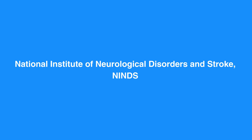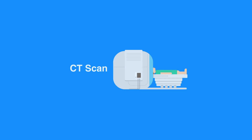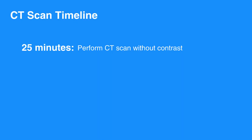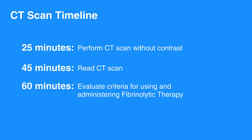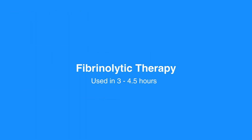The NINDS established time goals advise that the individual have a general assessment by an expert and an urgent CT scan without contrast within 10 minutes of arrival. Within 25 minutes, perform a CT scan without contrast and a neurological assessment, and read the CT scan within 45 minutes. Within 60 minutes, evaluate criteria for using and administering fibrinolytic therapy or clot buster. Fibrinolytic therapy may be used within 3 hours of symptom onset, or 4.5 hours in some cases. Within 180 minutes of arrival, the individual should be admitted to the stroke unit.